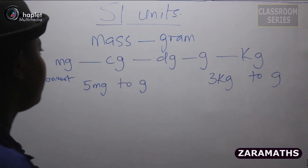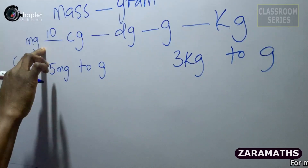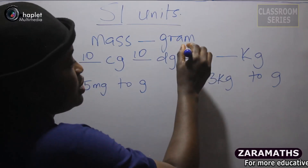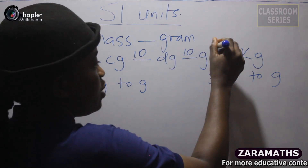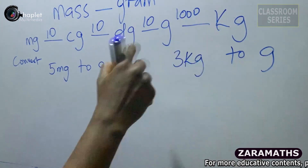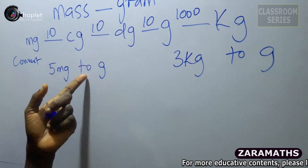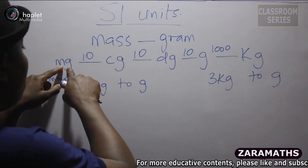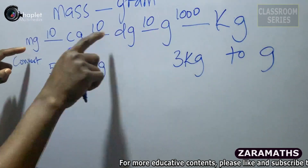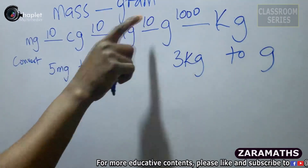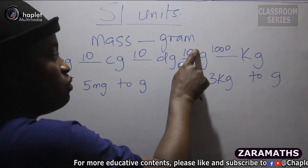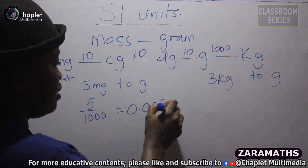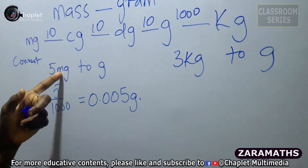Other units for measuring mass are milligrams, centigrams, decigrams, and kilograms. Just like the previous example, 10 milligrams makes one centigram, 10 centigrams makes one decigram, and 10 decigrams makes one gram. So to convert 5 milligrams to grams, you go forward and divide by 1000, giving us 5 over 1000, which is 0.005 grams.